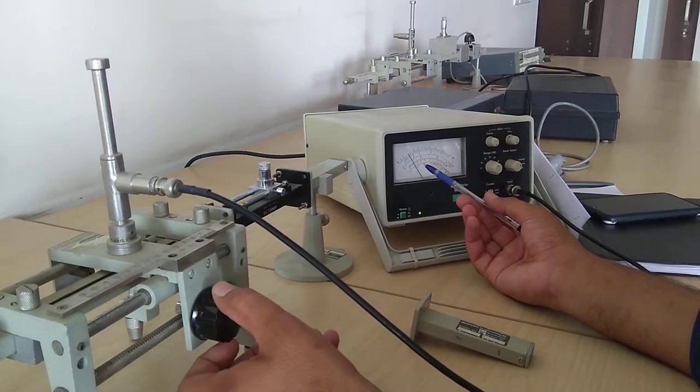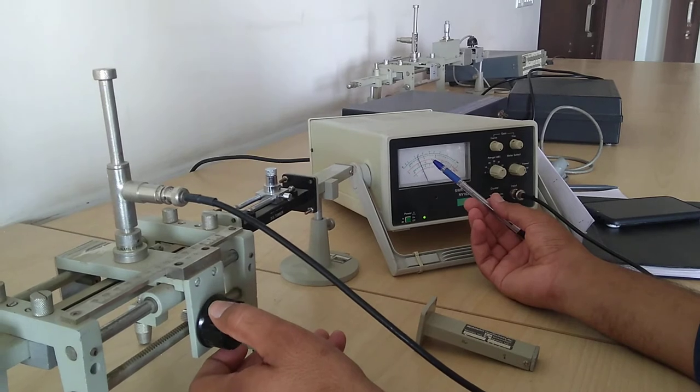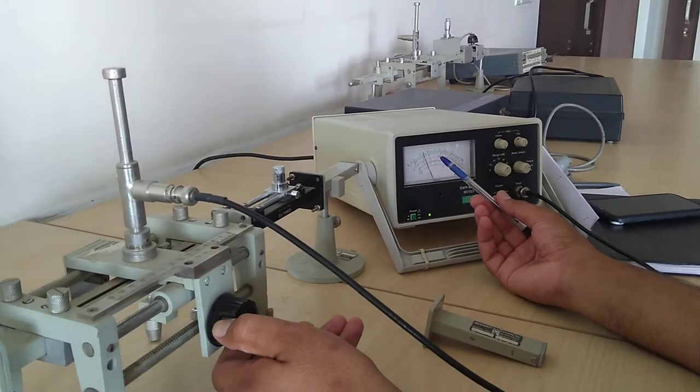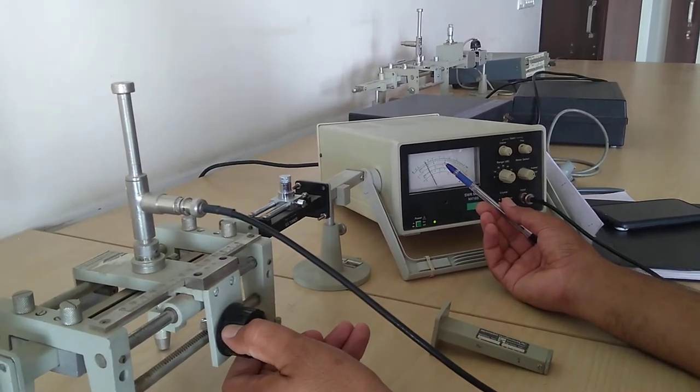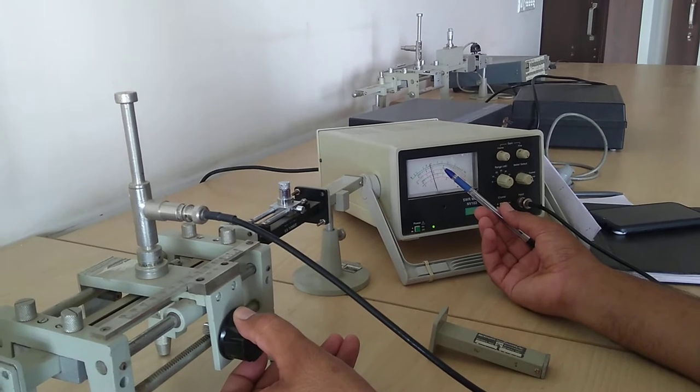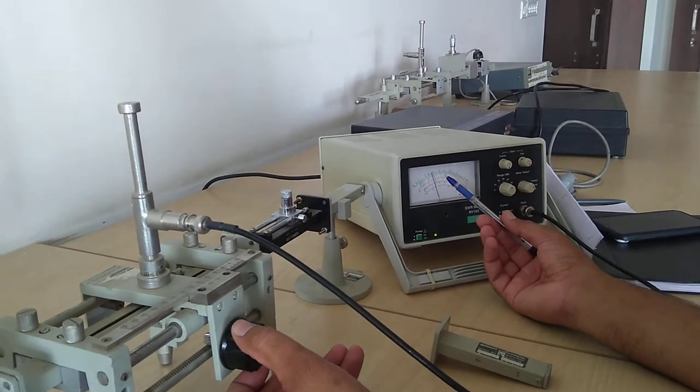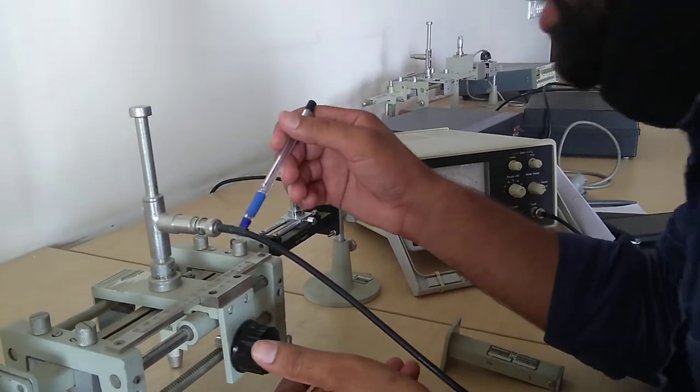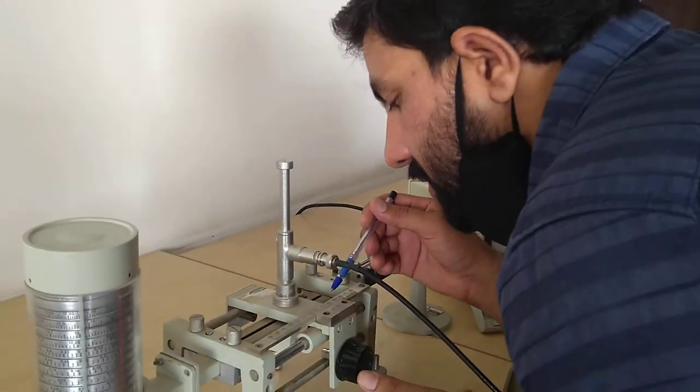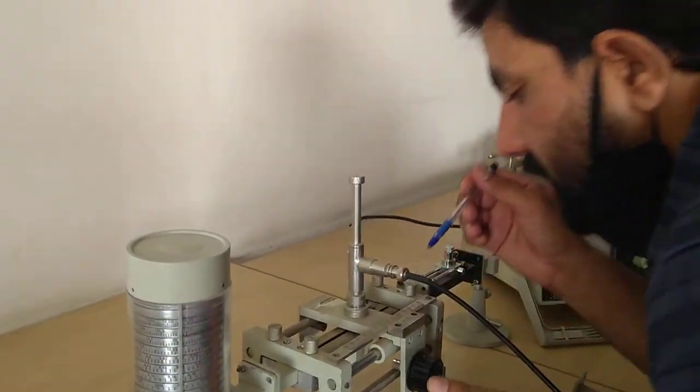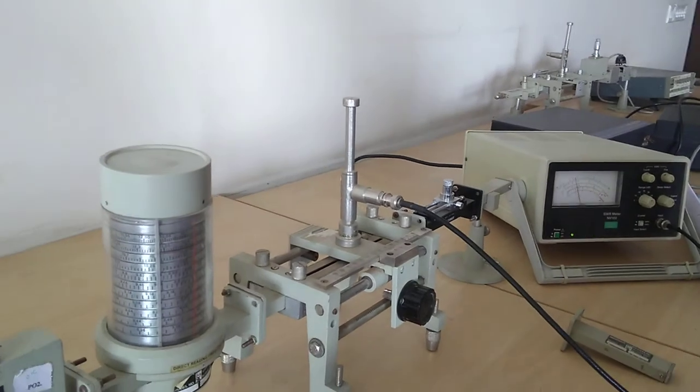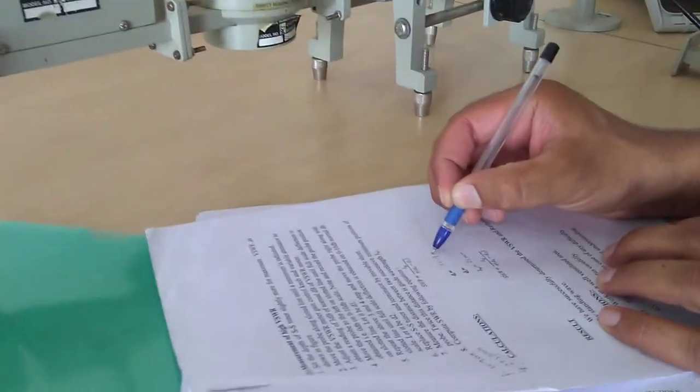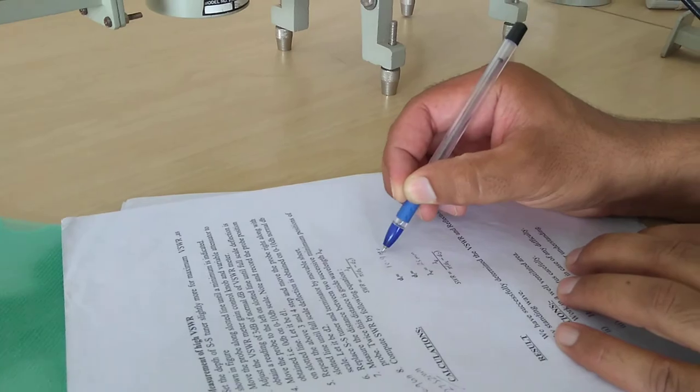Then I go for maxima. This is the maximum position. After that it goes back, so I note down the maximum reading position from this scale. From this scale I observe that d1 is approximately 10.9 cm.